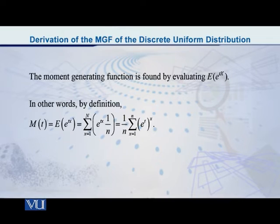Now, p(x) is equal to 1 over n. So let us put it there. What do we get? We get summation e raised to tx multiplied by 1 over n. This 1 by n is a constant, so obviously you can take it out. So what do we get now? It is 1 over n multiplied by summation e raised to tx.